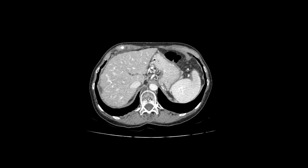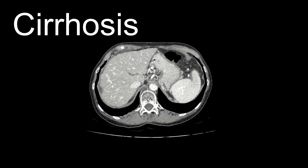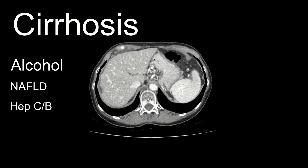Let's introduce the topic of liver cirrhosis. This is something that you'll see relatively commonly in clinical practice, so these concepts are important. Cirrhosis refers to a late stage of scarring or fibrosis in the liver with a number of different causes — basically anything that causes chronic liver injury, including chronic alcohol use, non-alcoholic fatty liver disease, viral hepatitis, etc.